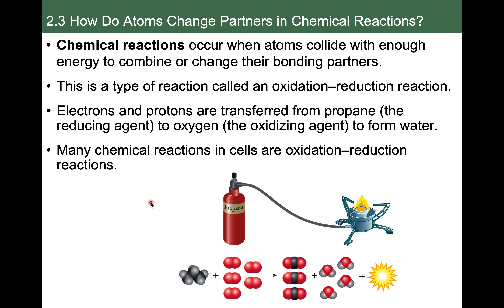All of what we've been talking about — these different types of bond formations — would really be considered chemical reactions. Any time atoms bump into each other and you are either forming a new bond or breaking an existing bond, that would be considered a chemical reaction. We're going to talk more about chemical reactions in upcoming chapters, but a lot of those we see are going to be what are called oxidation-reduction reactions — just tuck that term away, but we will come back to it.